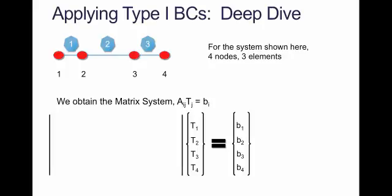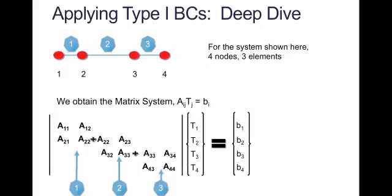When we do this, we will have our 4 unknown temperatures and our 4 known right-hand side values. Now, they may be 0, but they are all known. As we look at the AIJ matrix, we'll see that from element 1, we will have a submatrix of 4 values based on the weight and basis functions at the 2 nodes. Similarly, we will get a submatrix from element 2, and finally, a submatrix from element 3.